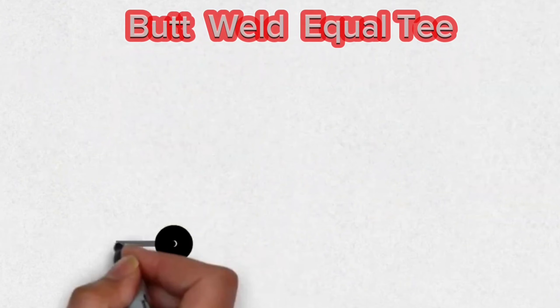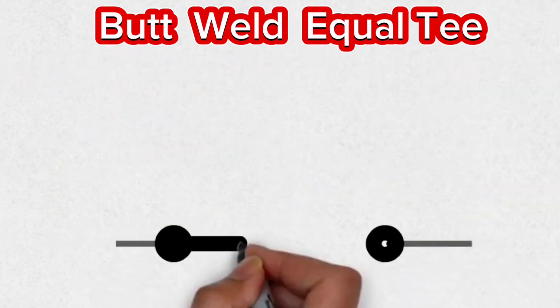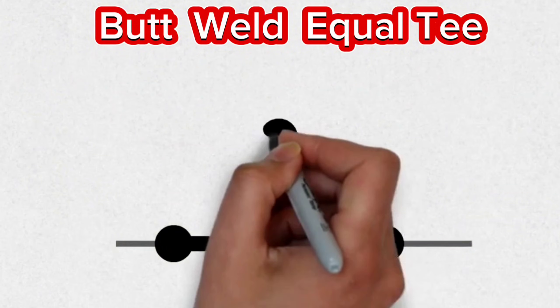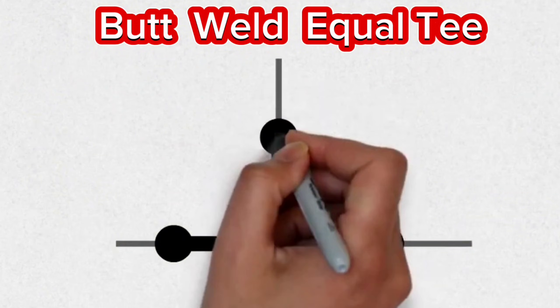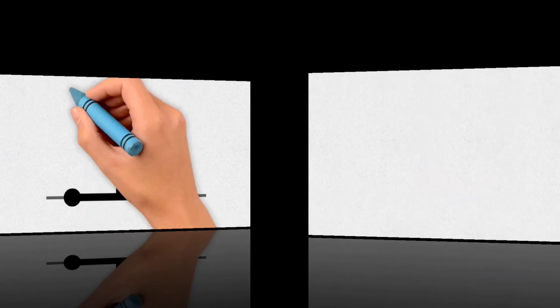This symbol, which is used in pipe isometrics, is the isometric symbol of the butt weld equal pipe T. These equal T symbols are used in pipeline projects where welding.